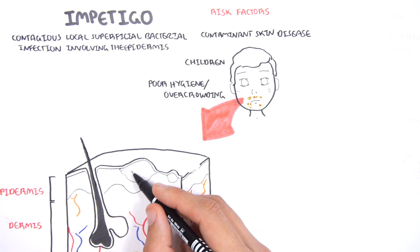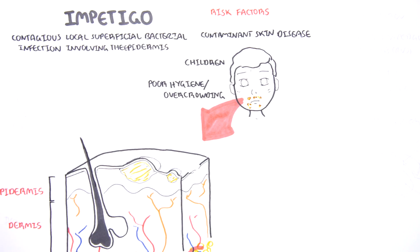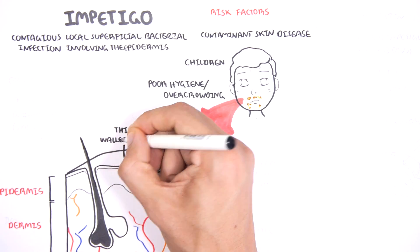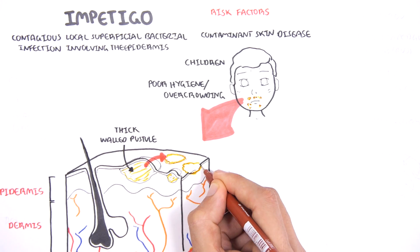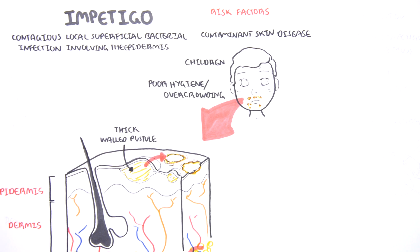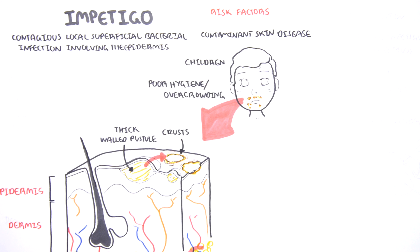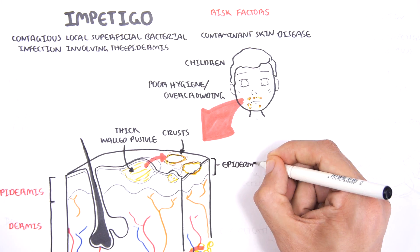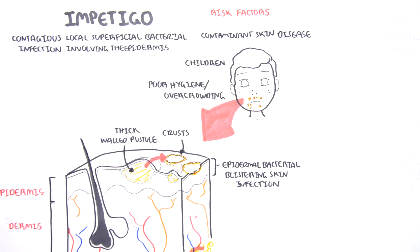What you see are small blisters forming, vesicles. It can also be pustules, which are usually thick-walled. But these can rupture, and when they rupture, they leave a yellow-brown crusting lesion around it. This is a classical feature of impetigo. It only involves the epidermis. Impetigo is an epidermal bacterial blistering skin infection.